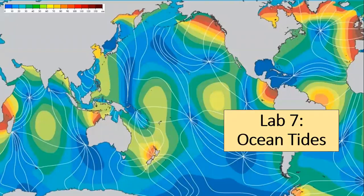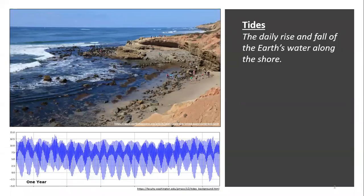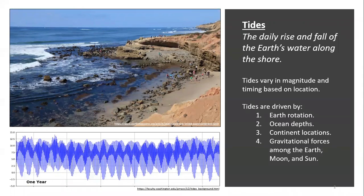Welcome to Lab 7, Ocean Tides. Tides are the daily rise and fall of Earth's water along the shore. In this lab, you will learn that tides vary in magnitude and timing based on location. Tides are driven by the rotation of the Earth, ocean depths, continent locations, and the gravitational attractions among the Earth, moon, and sun.